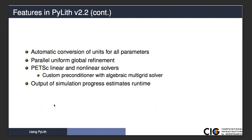We have parallel uniform global refinement. You can generate your mesh at one resolution and then PyLith can automatically refine that mesh by a factor of two or four at runtime. It's distributed in parallel. This allows you to run problems that are an order of magnitude size bigger than what you've generated the mesh for.